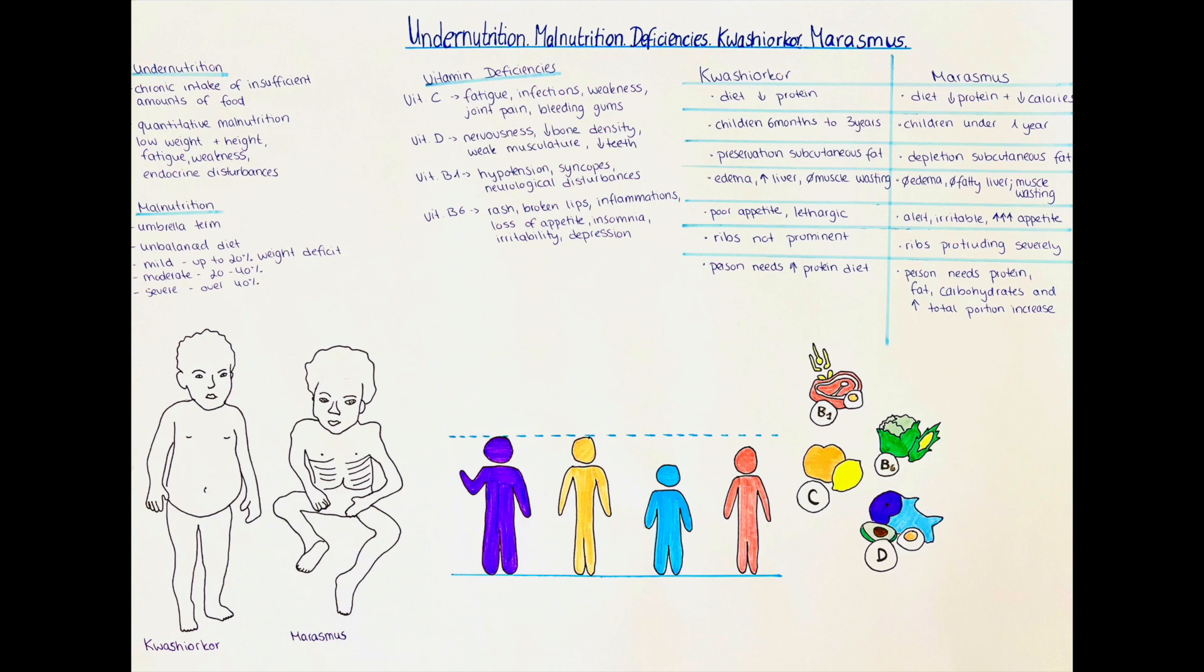Another subgroup of malnutrition is overnutrition. It usually goes hand in hand with obesity and if you want to know more about childhood obesity and metabolic syndrome you can see our video on that also in the pediatrics playlist.